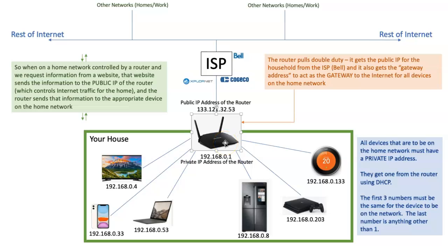If you're Snapchatting with a friend on your phone, the router knows to send that request out to your friend's device. And when information comes back, it's not going to go to another device on your network — it only goes to your device. Your router keeps track of all network traffic, making sure everything goes to the right place and nobody else gets your information.